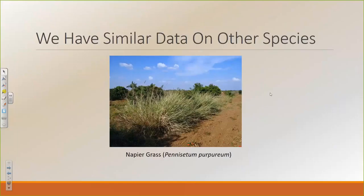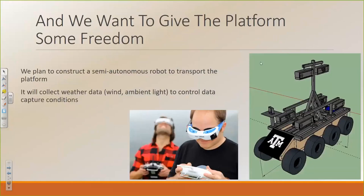On top of finishing the analysis of the remaining varieties, we've also collected very similar data on Napier grass, which we'll be analyzing in the coming months. We're also interested in creating a semi-autonomous robot to help carry the Kinect sensors as well as other sensors through the field. And we'd like to add sensors to measure wind and ambient light levels so we can control for those factors that degrade the quality of the data we're capturing.